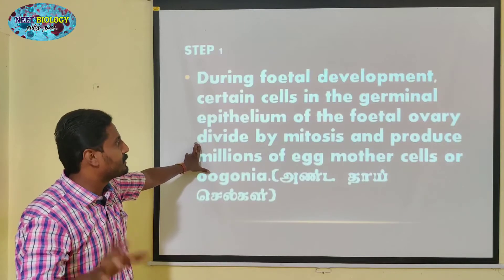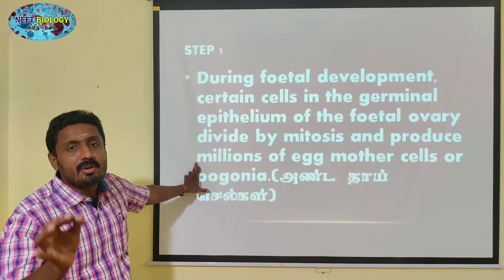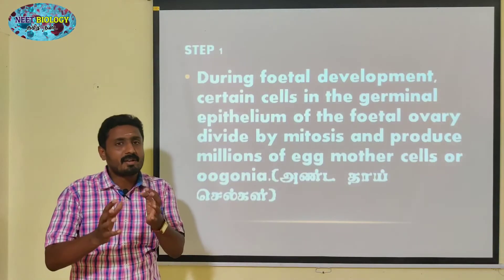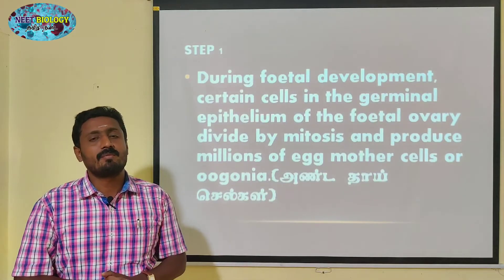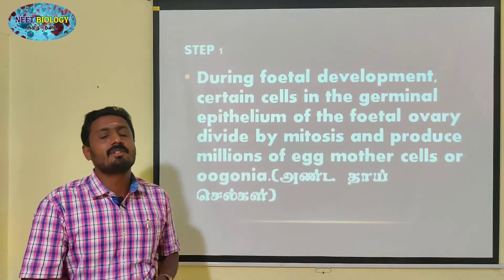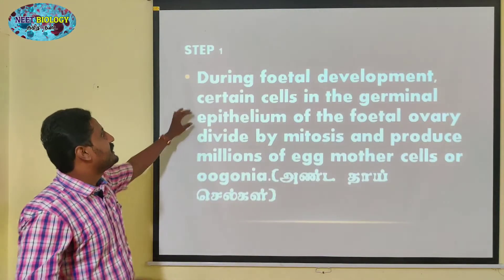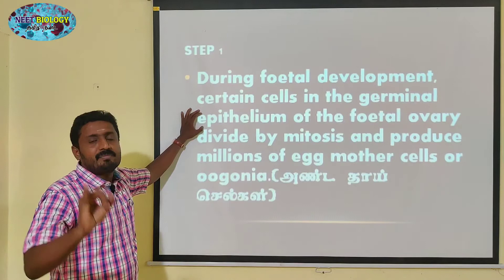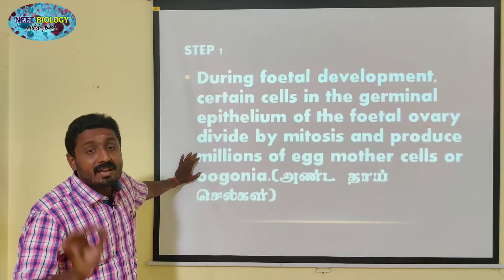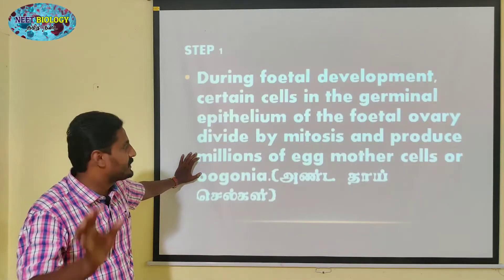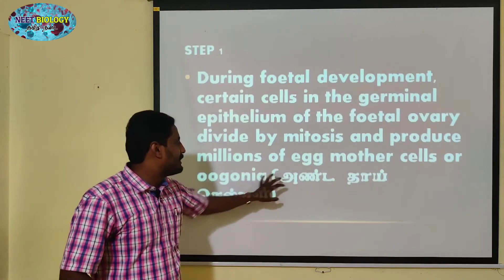Mitosis division, divide. Other than mother cells — the oogonia. So, this is how oogenesis starts. Oogenesis is starting at first. The first step is the germinal epithelium undergoing mitosis to produce egg mother cells. That egg mother cell is the first step.